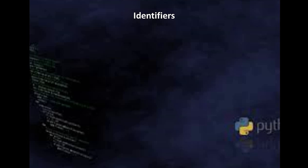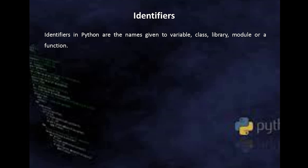Now let's move on to some elementary concepts of programming — what are identifiers? Identifiers in Python are the names given to variables, classes, libraries, modules, or functions. All these identifiers will have some naming rules, as in other programming languages. These rules are to be followed by the programmer and are checked by the Python interpreter. Identifiers are the names which identify the program elements like variable, class, library, module, or function.